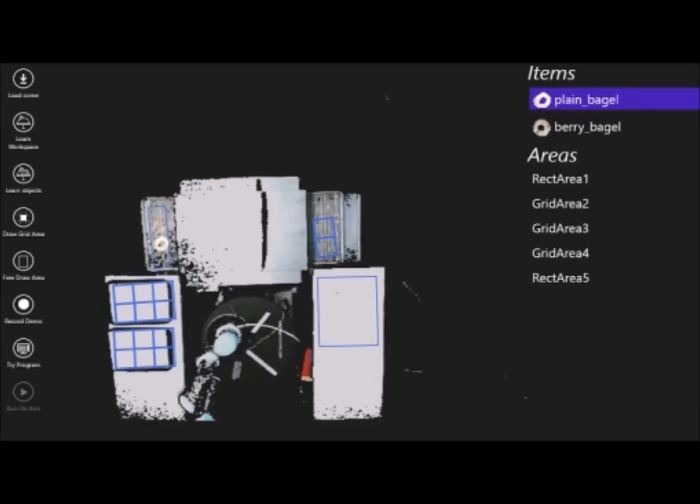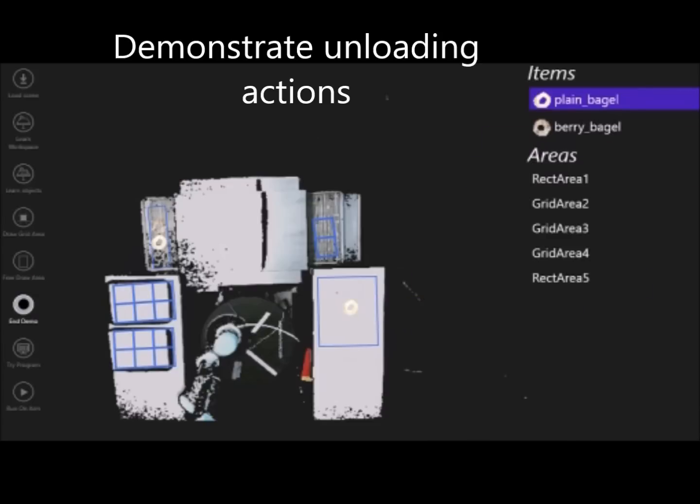To indicate priority, the unload tasks are demonstrated first. Virtual bagels are added to the scene. By dragging bagels, the baker demonstrates that plain bagels should be unloaded onto one of the grids and the berry bagel goes to the other.